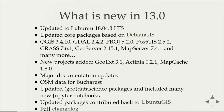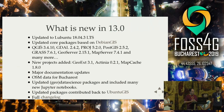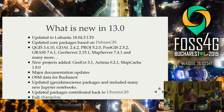What's new? We updated the Ubuntu distribution to the latest LTS, which was released three days before our release, so we had some last-minute problems but those were solved. We upgraded most of the core projects from Debian and Ubuntu. We now have QGIS 3, the latest GDAL, PROJ 5, PostGIS, GRASS, GeoServer — all these projects got an update. New projects included are GeoExt, Actinia, MapCache, and T-Rex. We also had documentation updates, included data from OSM, and have geodata science packages in Jupyter.